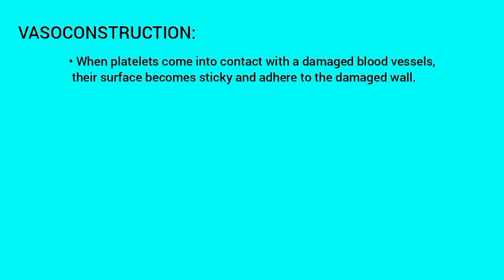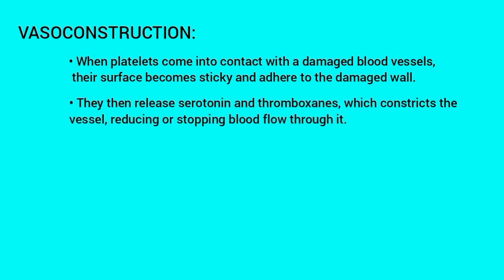Vasoconstriction. When platelets come into contact with the damaged blood vessels, their surface becomes sticky and they adhere to the damaged wall. They then release serotonin and thromboxanes, which constrict the vessel, reducing or stopping blood flow through it.